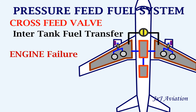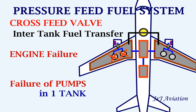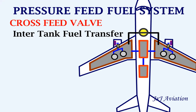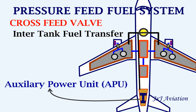The cross-feed valve is also helpful in case of failure of both the pumps in a tank. In this case, pressurized fuel from the left tank is transferred to the right engine. On the cross-feed line, the supply line to the APU is connected, so the APU can consume fuel from any of the available tanks.